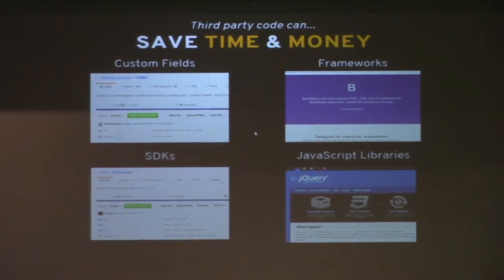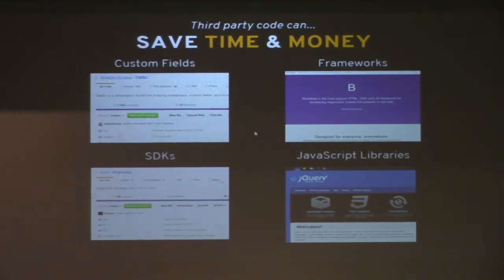Frameworks — everybody's heard of Twitter Bootstrap. It's just one of the most popular frameworks for building either a web application or a website. Foundation is also very popular. SDKs — software developer kits. For instance, this is the Stripe PHP SDK. It makes it really easy to communicate with Stripe's API to do certain things like update customer records or retrieve payment information.